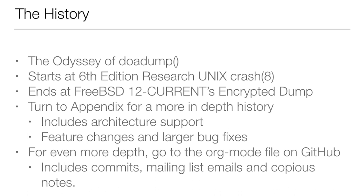Now, the history. I like to call this the odyssey of do_a_dump — the function that carries us through every single version of BSD. We start at 6th edition research Unix in their crash(8) man page, and it ends at FreeBSD 12 current's encrypted dump. In the paper, you can go to the appendix for the extended history, which includes architecture support, different features relevant to the core dump code, feature changes, and larger bug fixes.